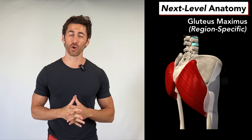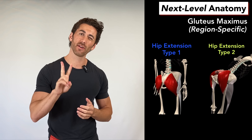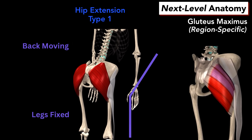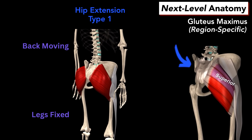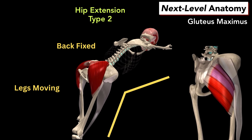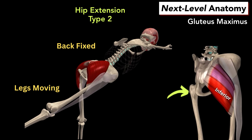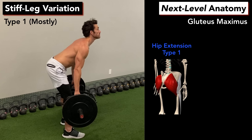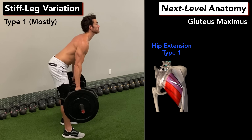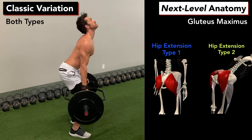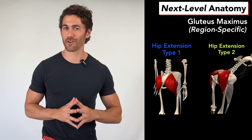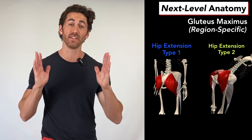To get the full picture of how the gluteus maximus is worked in the deadlift, we also have to understand that there are actually two different types of hip extension, and they work the gluteus maximus differently. The first is where the legs are fixed and it's the back that's moving, and that has been proven to work the upper region of gluteus maximus more than the lower. The second is where the back is fixed and it's the legs that are moving, and that works the lower region of gluteus maximus more. In the stiff leg variation, your legs are mostly fixed and your back is doing all the extending, so it's going to work the upper gluteus maximus the most, while in the classic variation, you're doing an even mix of both types, so it will work the upper and lower regions equally — just the first example of why fully understanding the anatomy behind the exercise can make such a big difference in your training.